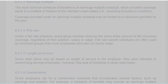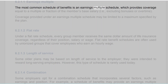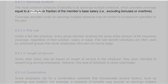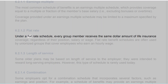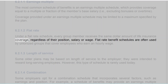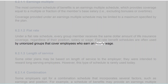6.2.1.1 Earnings Multiple. The most common schedule of benefits is an earnings multiple schedule, which provides coverage equal to a multiple or fraction of the member's base salary, excluding bonuses or overtime. Coverage provided under an earnings multiple schedule may be limited to a maximum specified by the plan. 6.2.1.2 Flat Rate. Under a flat rate schedule, every group member receives the same dollar amount of life insurance coverage, regardless of their position, salary or wage. Flat rate benefit schedules are often used by unionized groups that cover employees who earn an hourly wage.